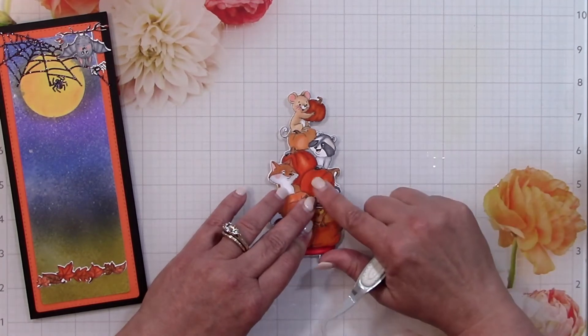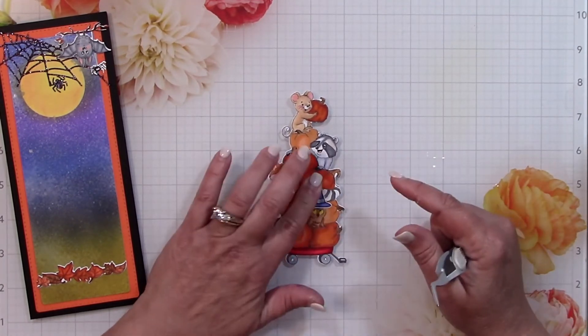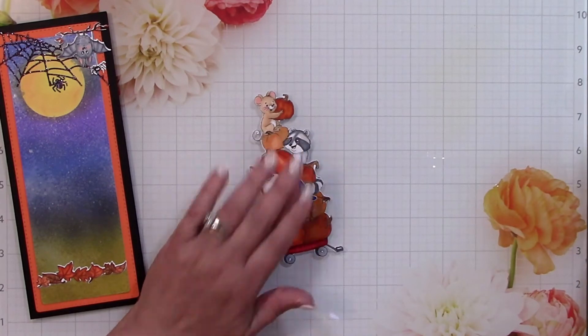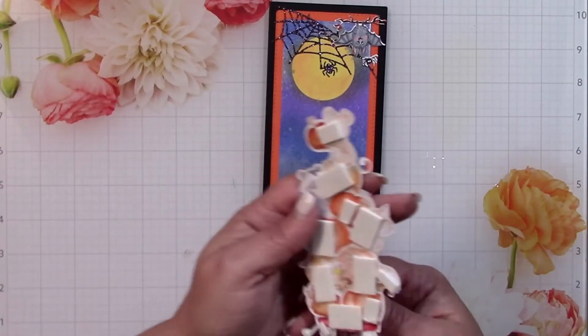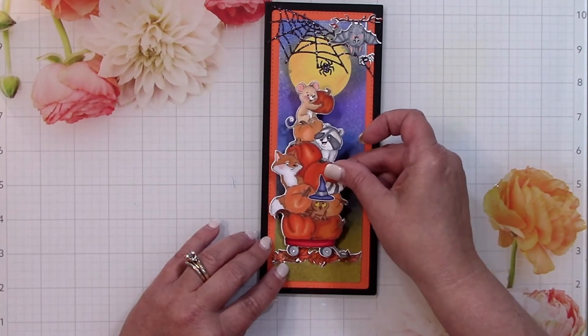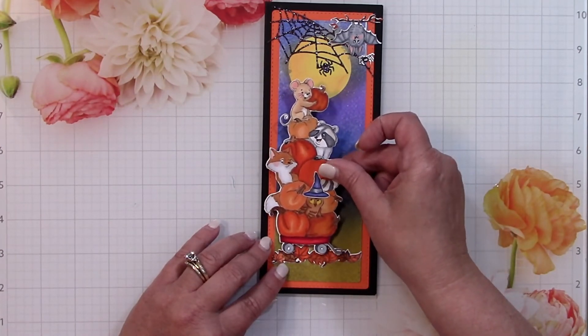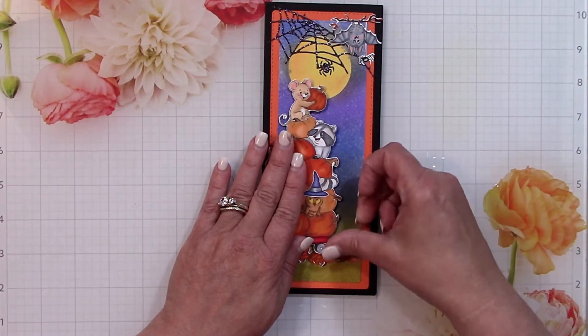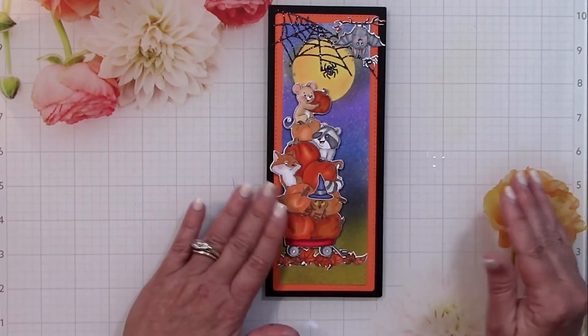And then here is the little witch's hat that comes as a separate image. I thought it would be cute on that owl. I did consider putting it on either the fox or the raccoon, but in the end I just put it on the owl. He's the wise old owl, I guess.